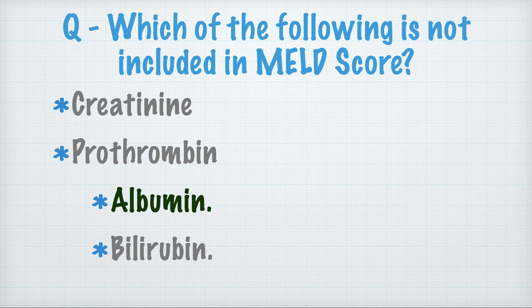Which of the following is not included in the MELD score? The options were creatinine, prothrombin, bilirubin, and albumin. Creatinine, prothrombin, and bilirubin are included in the MELD score, so albumin is not included — the answer is albumin.